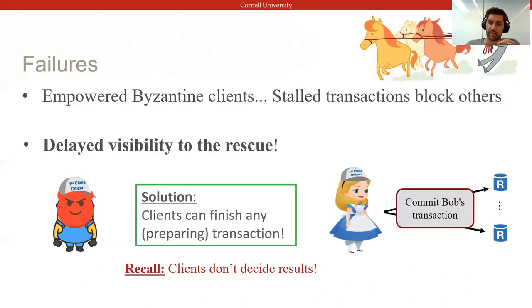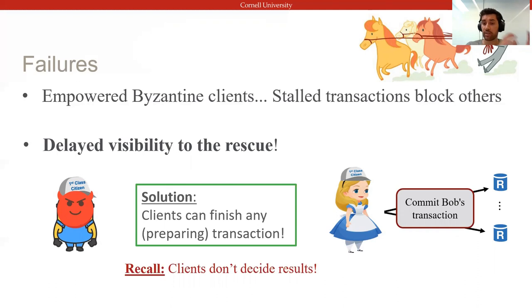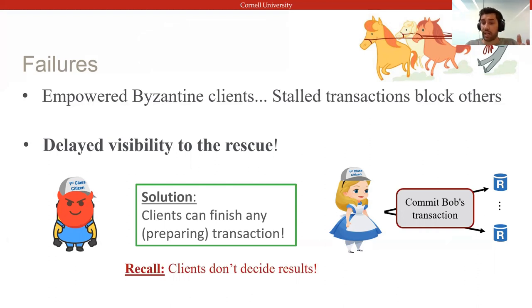The way we address this in Basel is by allowing any client to drive the commit protocol for any transaction. This is perfectly safe, since only the writes of completed transactions are visible — because we delayed visibility until the commit stage — and the client is not able to decide the outcome of a transaction, so it doesn't matter which client drives the commit protocol.